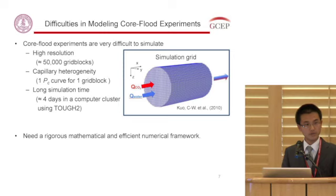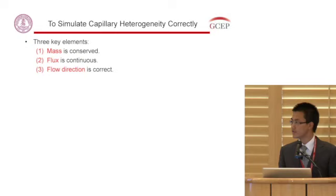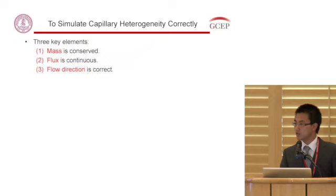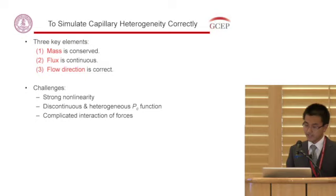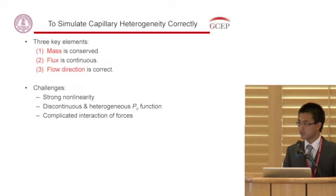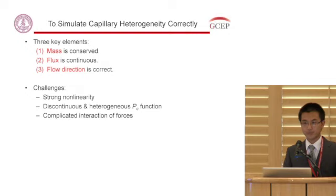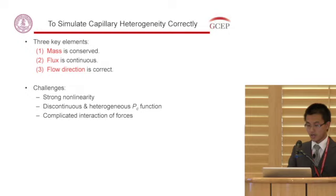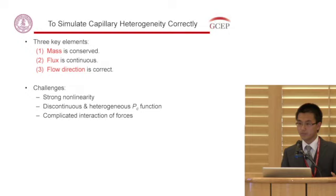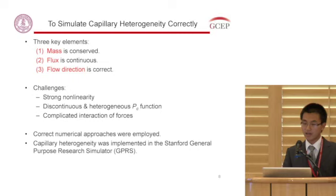From a numerical standpoint, to model a physical process correctly, we need to honor three key elements: mass conservation for each simulation grid block and for the entire simulation domain; flux continuity across each grid block interface; and the correct flow direction at each grid block interface. The challenges of capillary heterogeneity include strong non-linearity introduced by the capillary pressure term, discontinuity and heterogeneity of capillary pressure functions posing significant challenges in honoring flux continuity, and complicated interaction of viscous, buoyancy, and capillary pressure forces troubling the simulator on flow direction. We have identified and employed the correct numerical approaches to tackle these three challenges simultaneously.